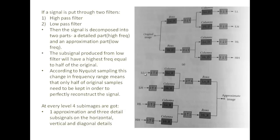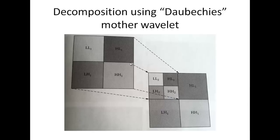To reconstruct this, I just apply the reverse. I have LL and LH, and according to the Nyquist theorem, I should be able to reproduce the image by up-sampling across the columns and then again up-sample across the rows. Similarly, applying it across the columns, I get my approximate image which should be equal to the original image. Daubechies' mother wavelet generally gives such a result, which we will look at further in the tutorial.